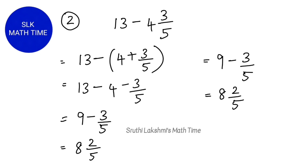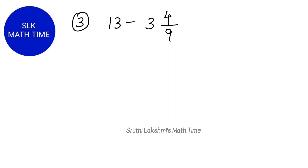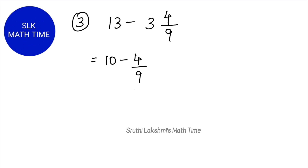See how easy and quick you can solve this equation when you use the trick. Now let's take a look at one final example: 13 minus 3 and 4 ninths. We subtract the whole numbers: 13 minus 3 is 10. Next, we bring down 4 ninths as it is — so 10 minus 4 ninths. 1 less than 10 is 9, so we write down 9. Then 9 minus 4 is 5, so 5 is the numerator and 9 stays as the denominator.